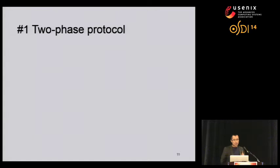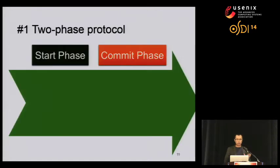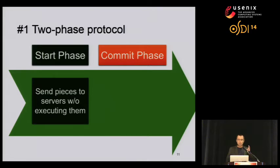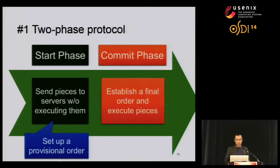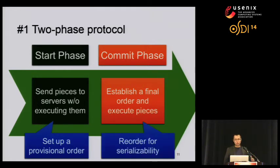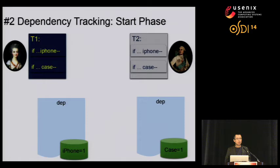The delayed execution model sets up a two-phase framework for Rococo. In Rococo, each transaction has two phases: a start phase and a commit phase. The start phase is about sending all pieces to corresponding servers to set up and collect a provisional order without actually executing these pieces. In the commit phase, Rococo will use the information just collected to establish a serializable execution order, and each server will execute the deferred pieces following this order. The key challenge with this two-phase protocol is how to identify conflicts and reorder them without a centralized bottleneck — and this is why we have our second technique, dependency tracking.